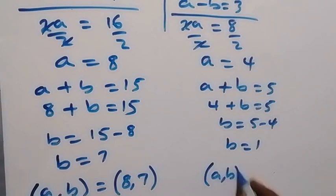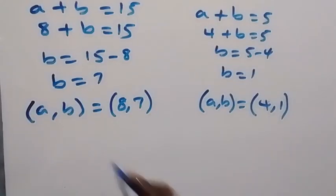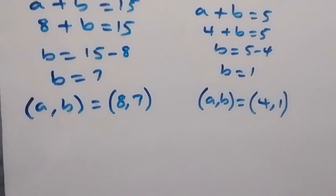So (a,b) = (4,1). In the next step, we can check if these satisfy the given problem.